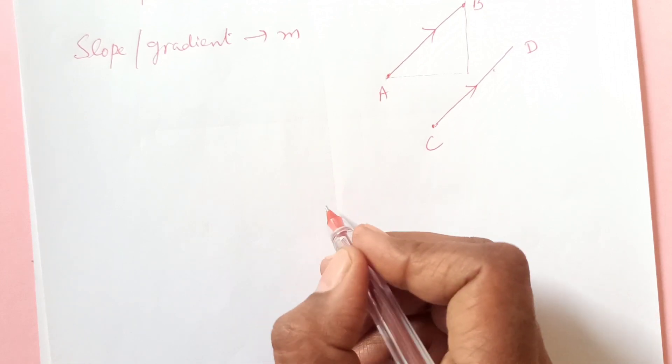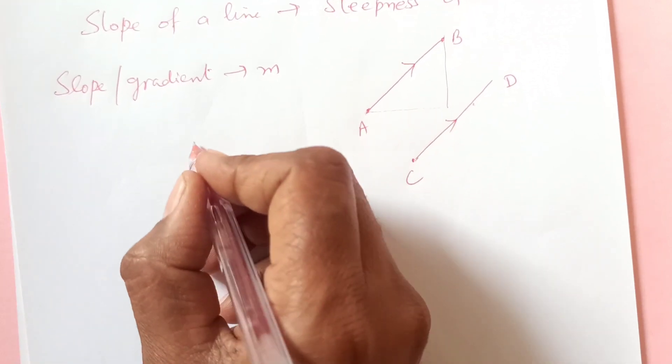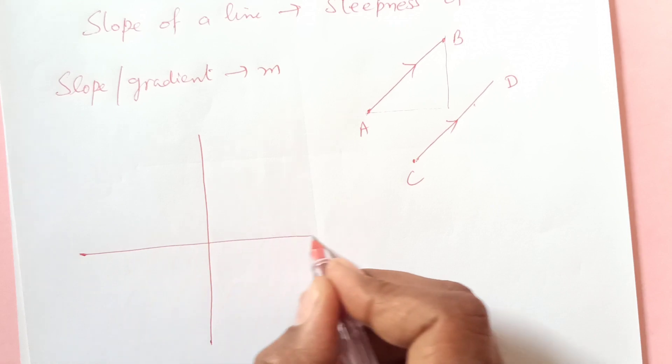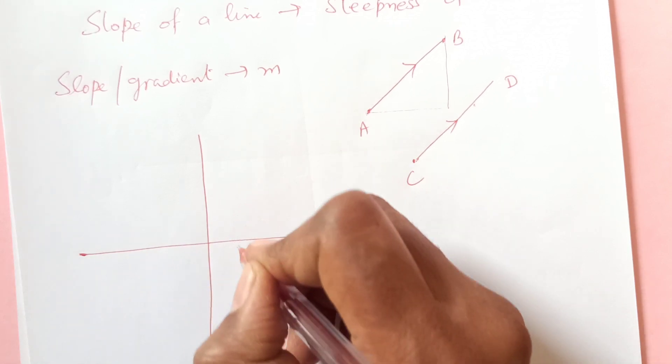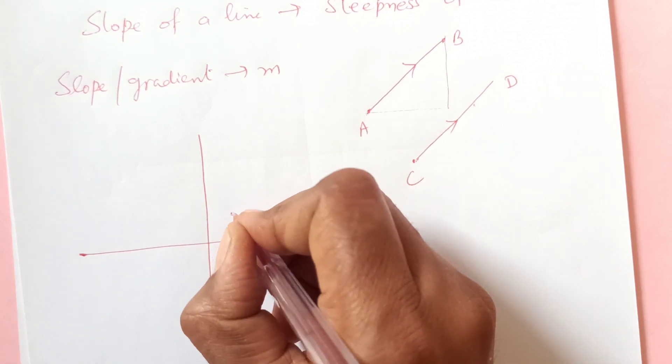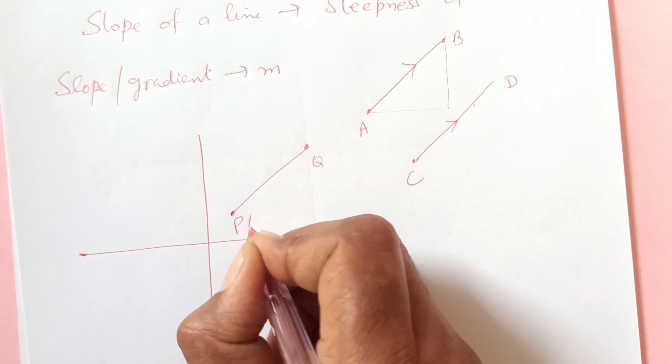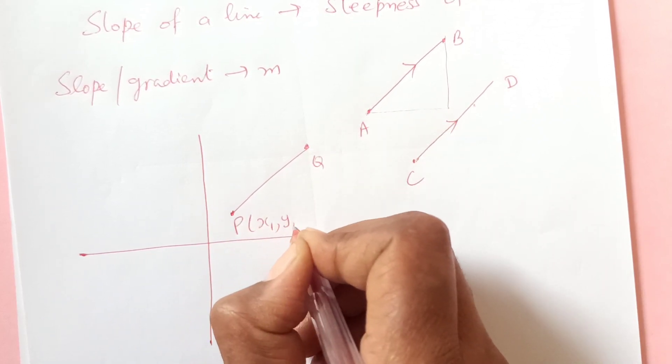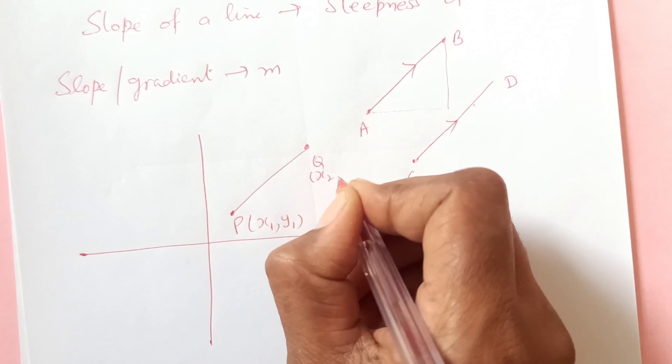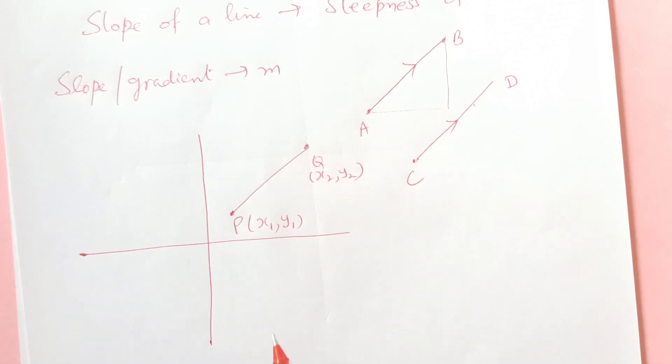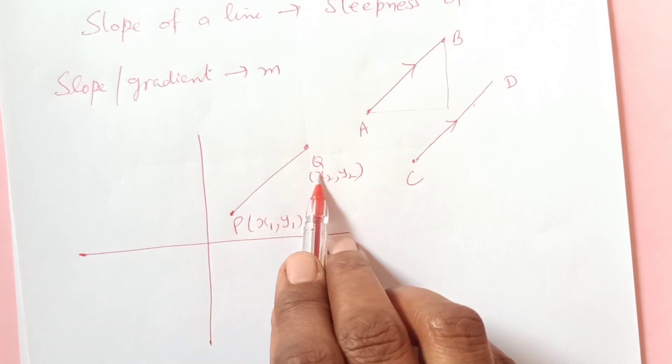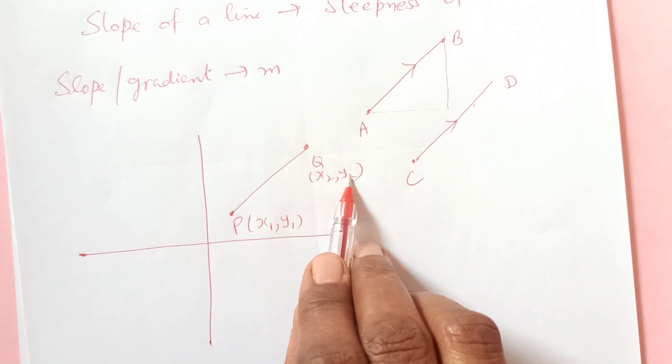Let's say we have a coordinate axis and then we have a point here P and the other one is Q. I'm just taking in general the coordinates x1, y1 and this is x2, y2. So x1, y1 is the coordinate of P and x2, y2 is the coordinate of Q.